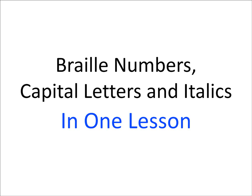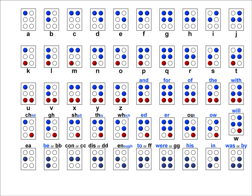This is Braille Numbers, capital letters, and italics in one lesson. Starting where we left off in the last video, the top row of letters A through J is also used to represent numbers 1 through 9 plus 0.